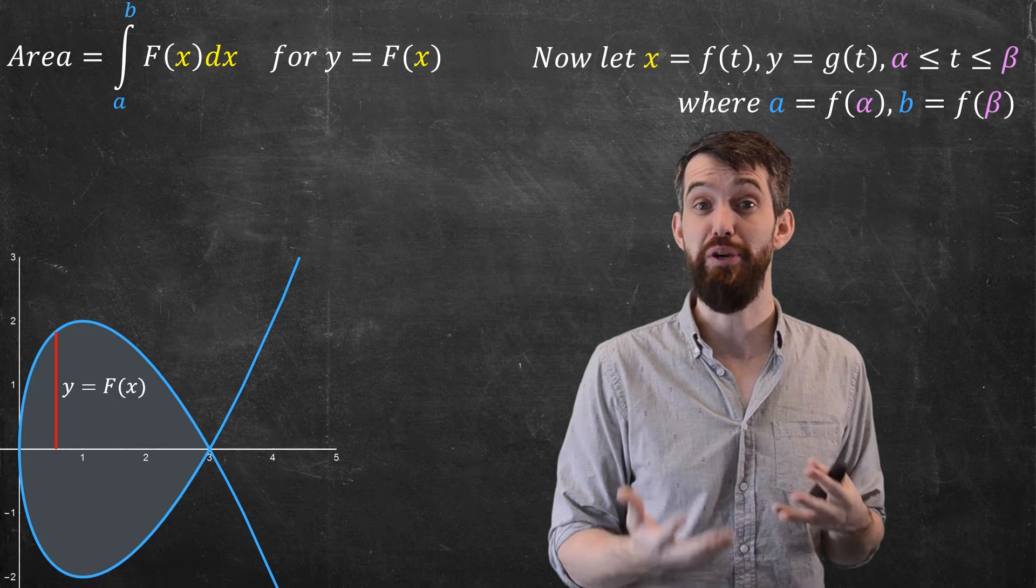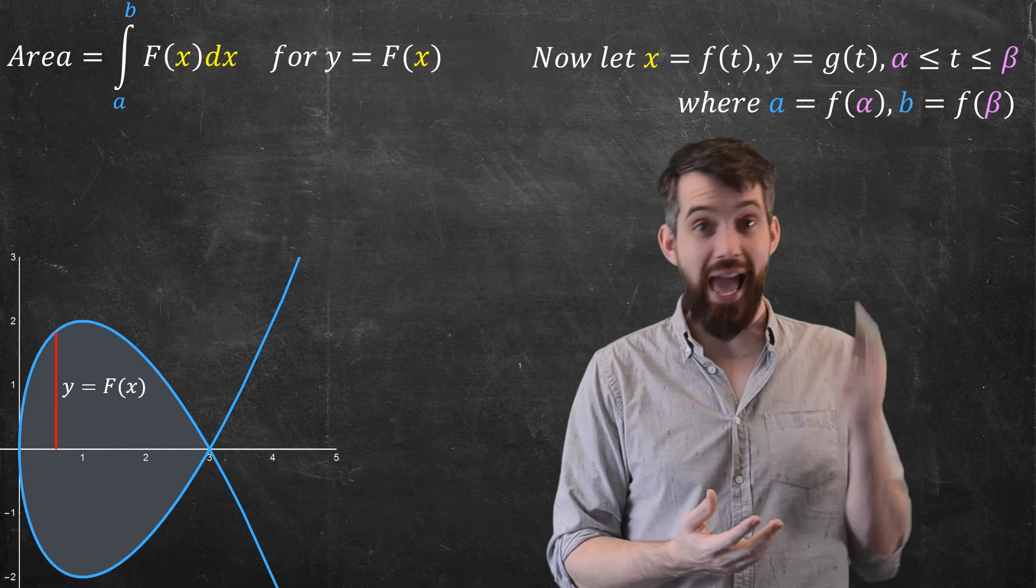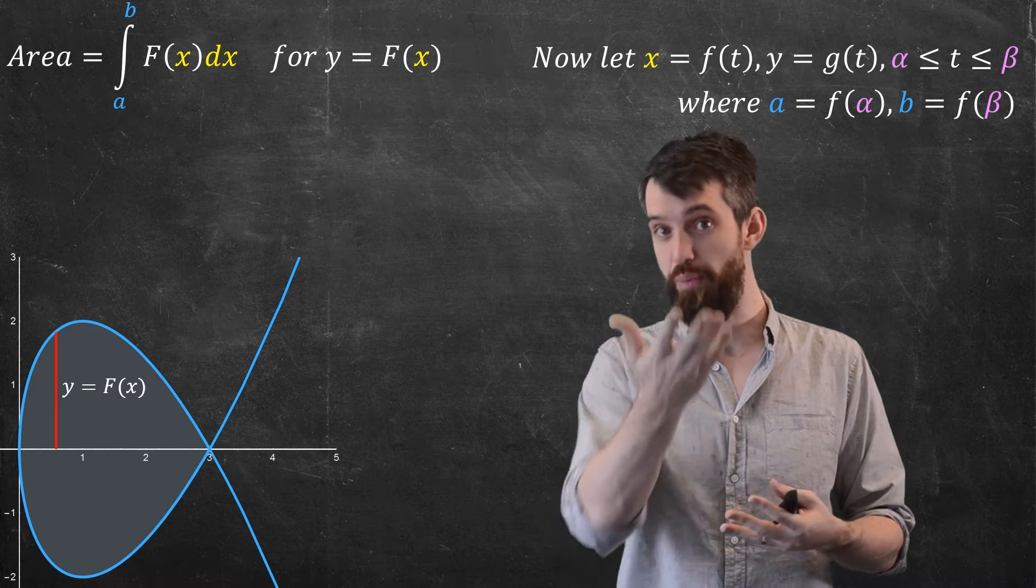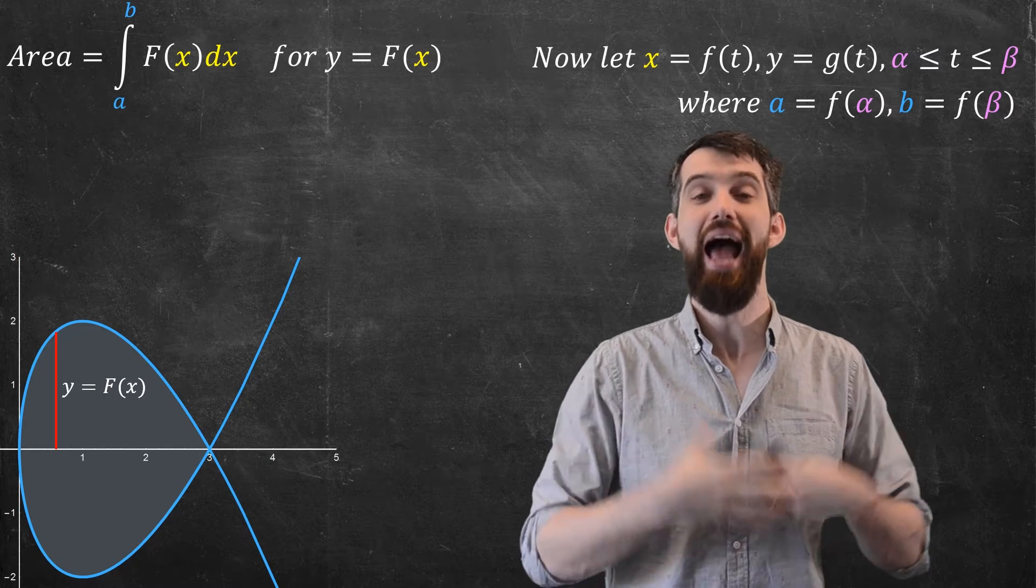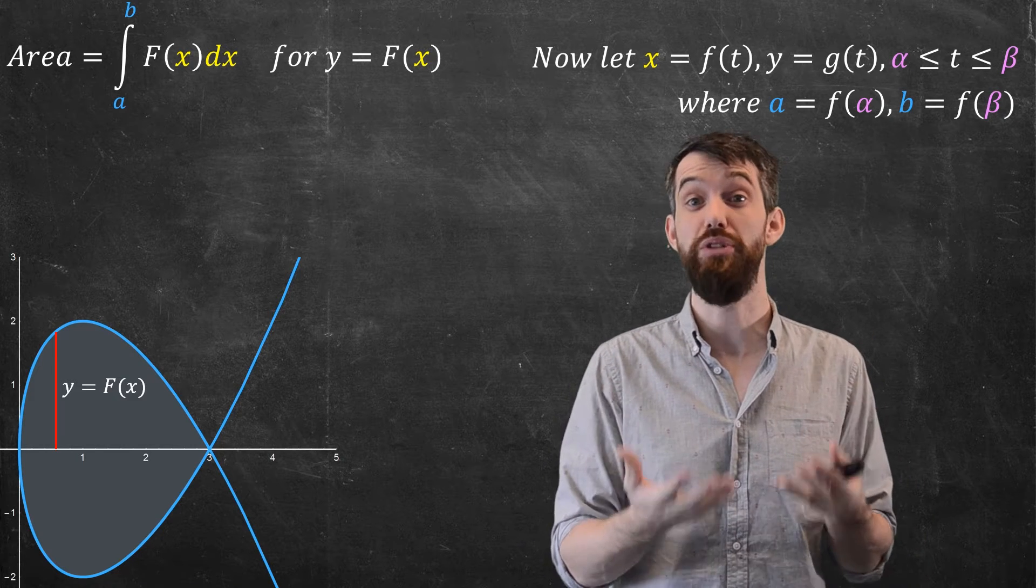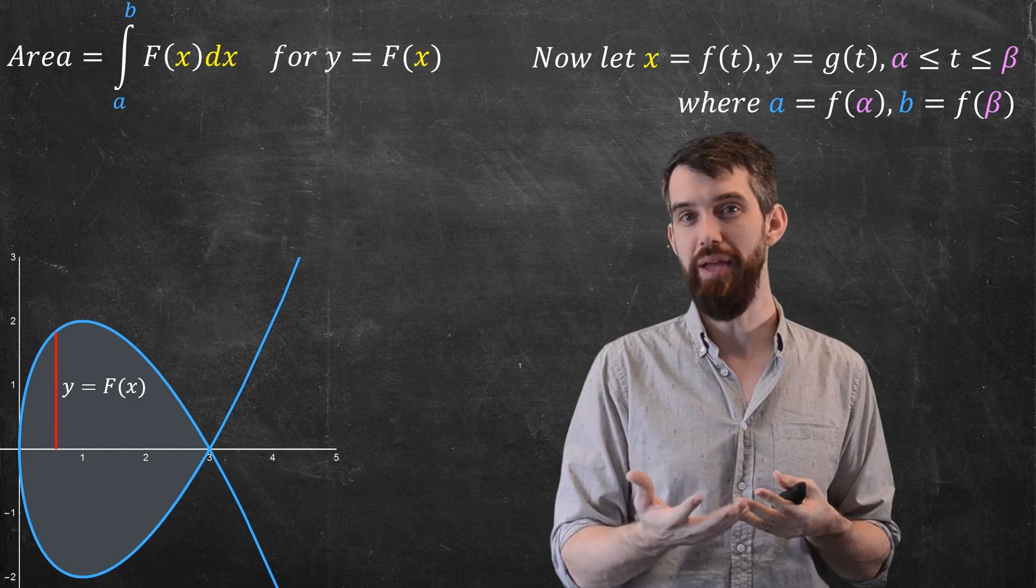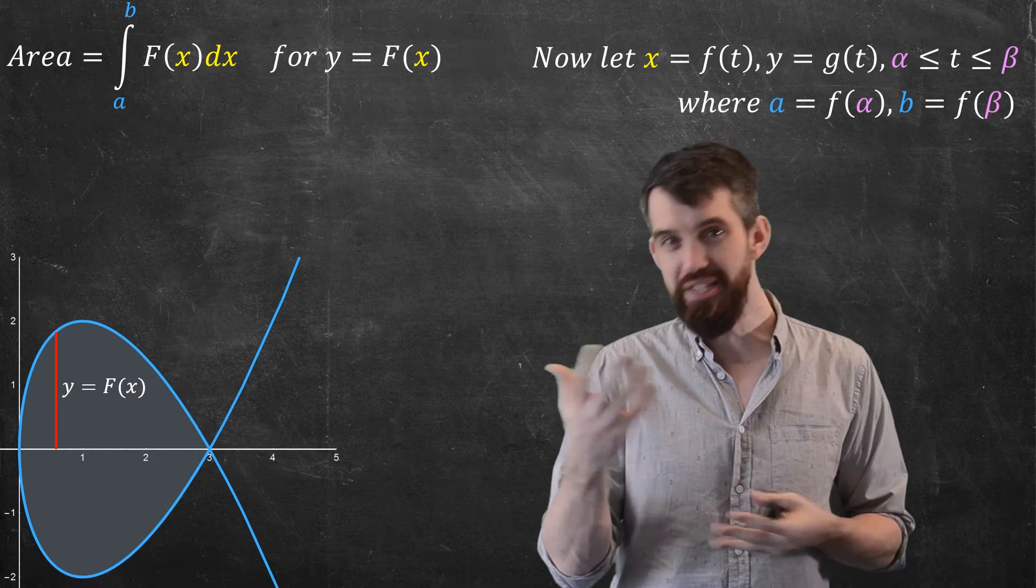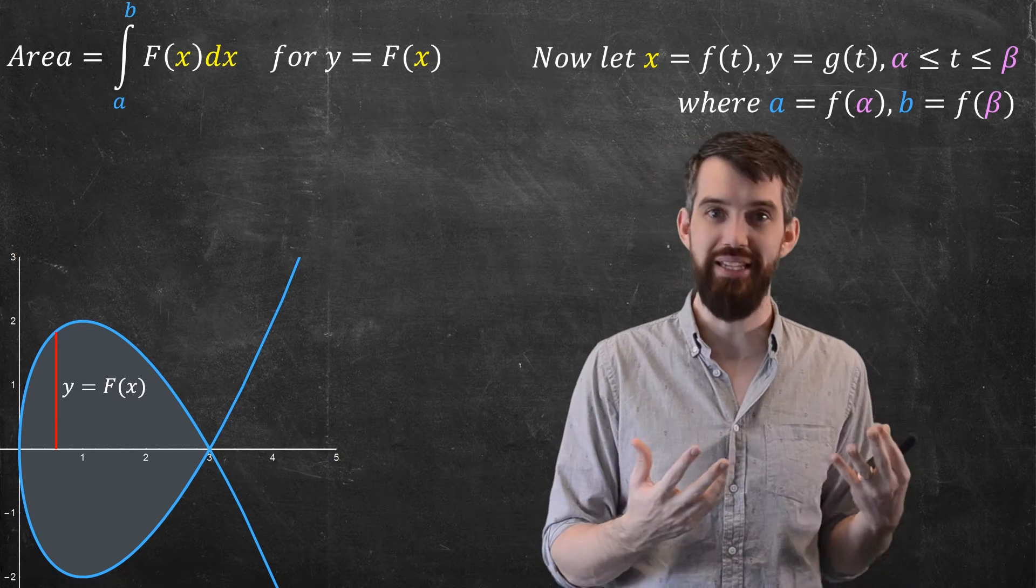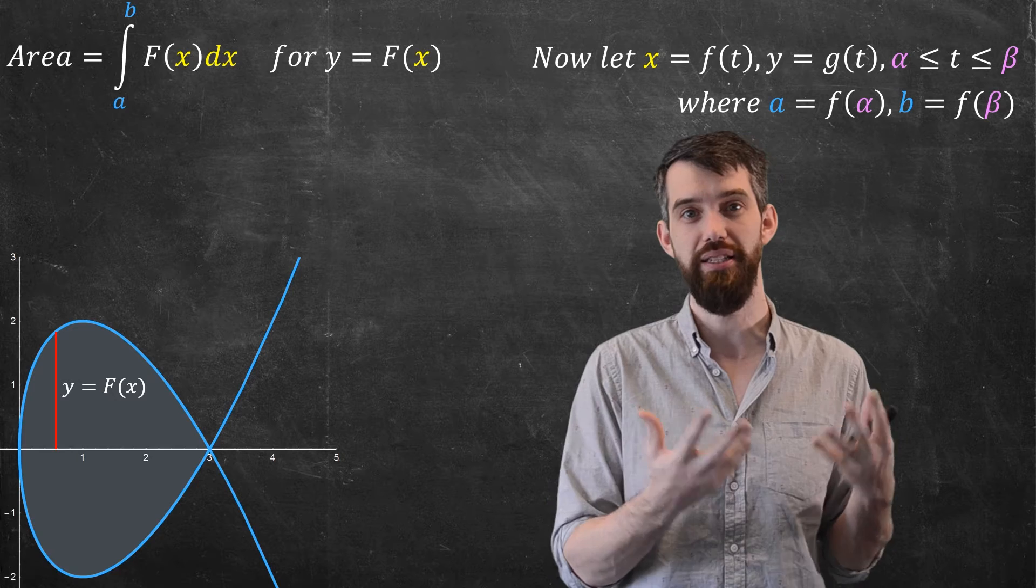And you can line them up with the previous formula by saying that the a is the f, remember f is the function that represents the x, at the value of alpha, and that b is equal to the f at the value of beta. But nonetheless, I had to switch from a's to b's to alpha's to beta's to keep the difference between x and t separate.